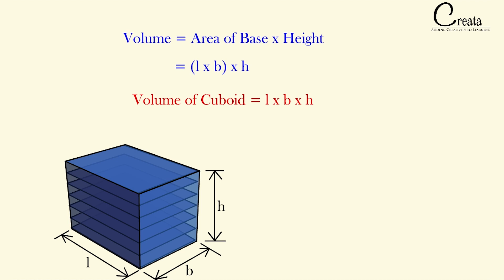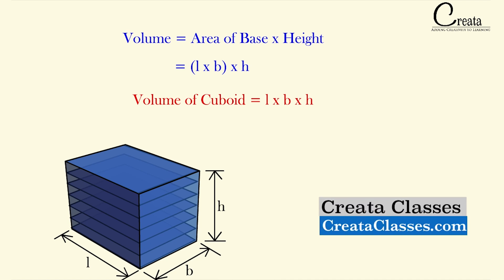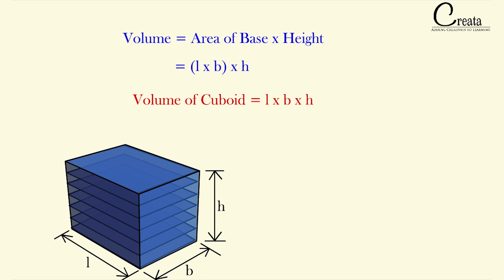We took the area of the base and multiplied it by the height of the cuboid — the height up to which we added the congruent rectangles. The same fundamental applies to all 3D cases where congruent bases are stacked. Here the base is a rectangle; if we change the base, the formula changes. For example, if we take a circle instead of a rectangle, the formula changes — that we will see in the cylinder portion.